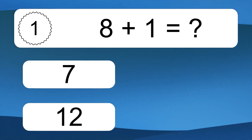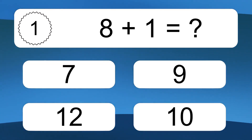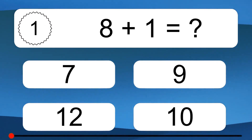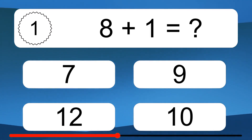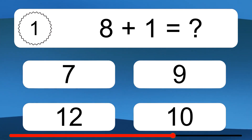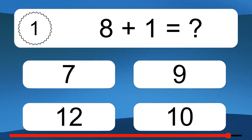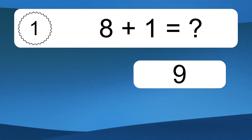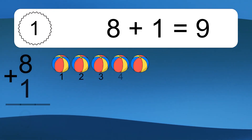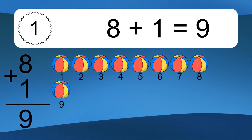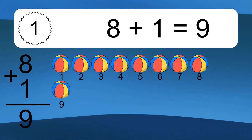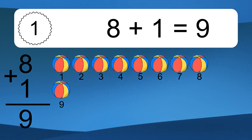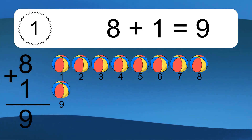8 plus 1 equals what? 8 plus 1 equals 9. Let's count it. 1, 2, 3, 4, 5, 6, 7, 8, 9.